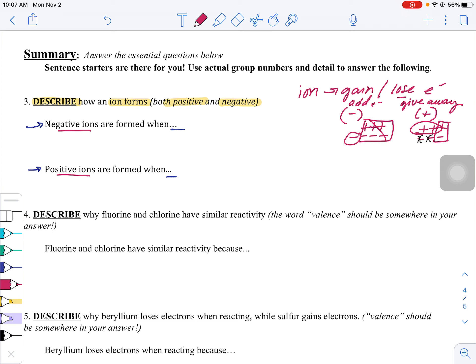So negative ions are formed when you want to say, are they electrons gained or lost? And then same thing here for positive.